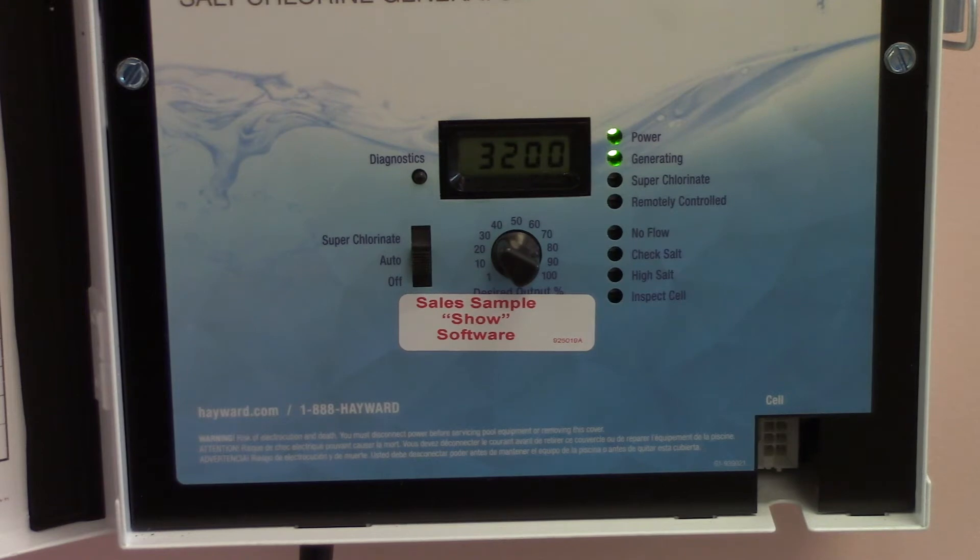Now it's important that you keep in mind that that 30% is not that the cell is running at 30%. The cell always runs at a hundred percent but for 30% of the time. So that means every hour that you're running your pump, 18 minutes this cell is running at a hundred percent in order to provide you your chlorine.